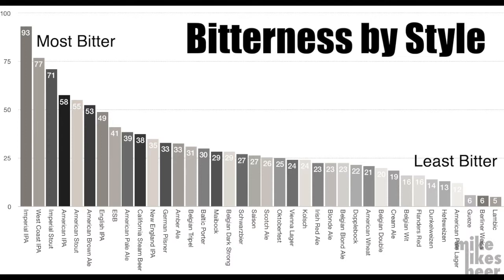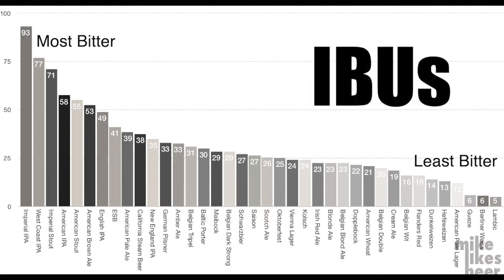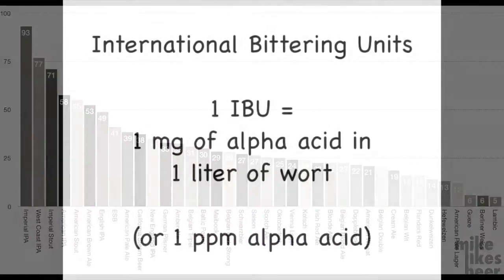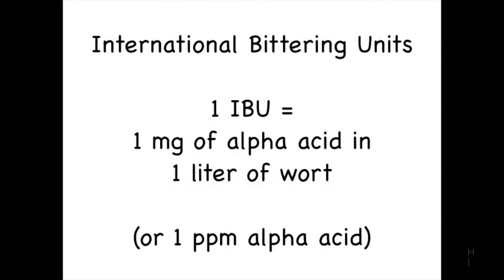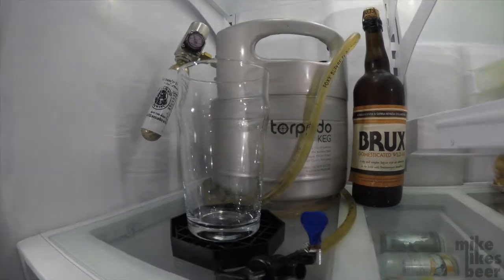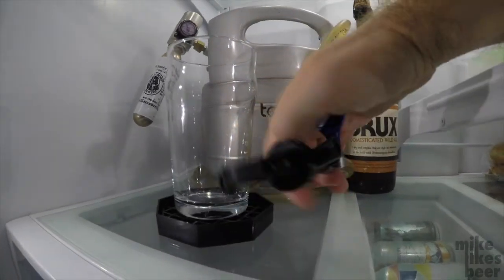By the way, there's an official scale for describing perceived bitterness — because of course there is — and it is the International Bittering Unit, or IBU, scale. This scale starts at zero and has no end. One IBU is defined as one milligram of alpha acid in one liter of wort, or one ppm alpha acid.